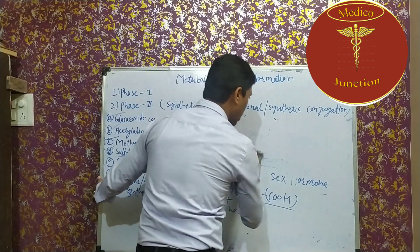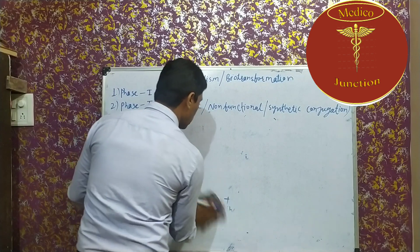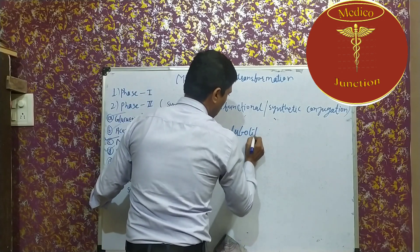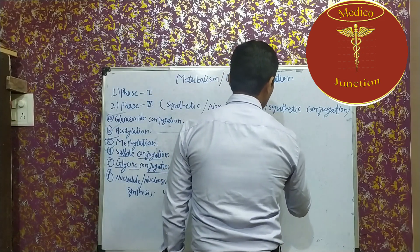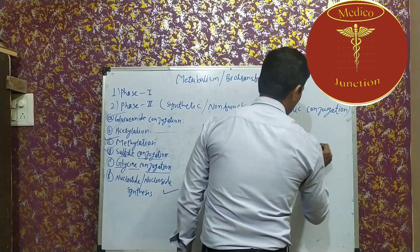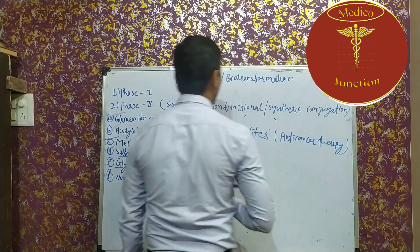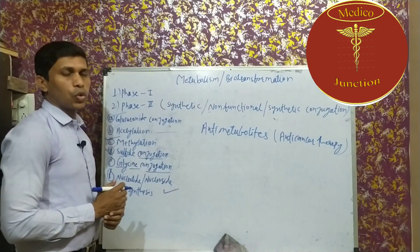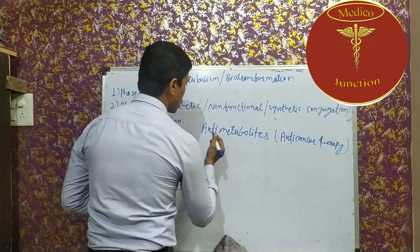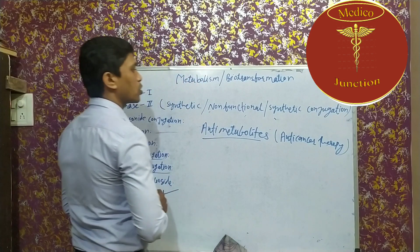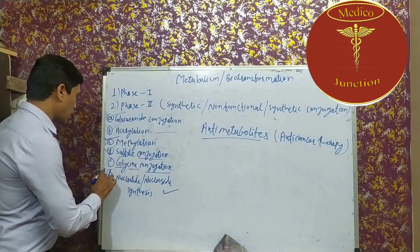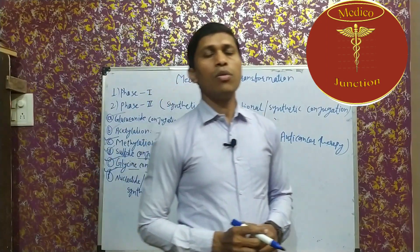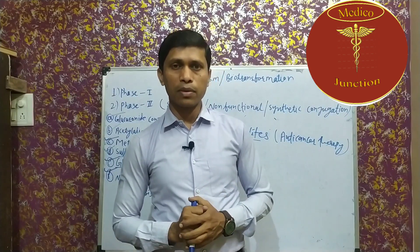After glycine conjugation, the next Phase 2 reaction is nucleotide or nucleoside synthesis. In nucleotide or nucleoside synthesis, especially anti-metabolite drugs — which are used in anti-cancer therapy — undergo metabolism through nucleotide or nucleoside synthesis. This is also part of Phase 2 metabolism, which is called non-functional or synthetic conjugation.